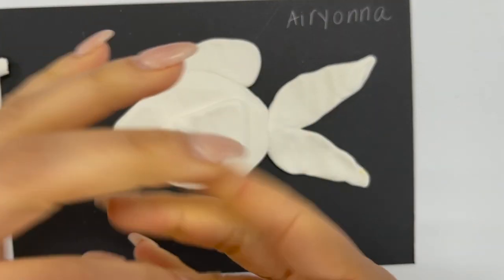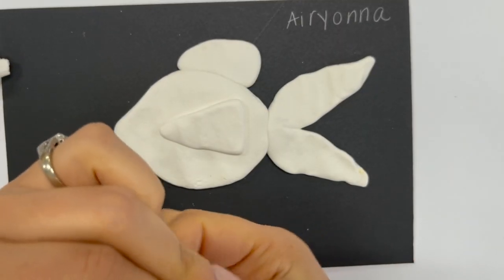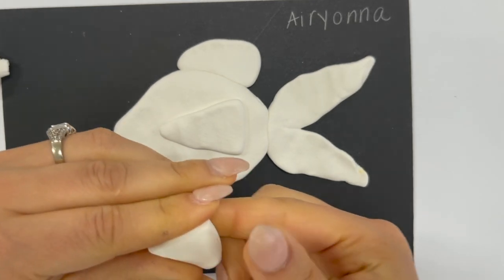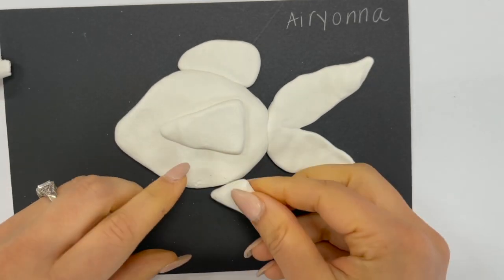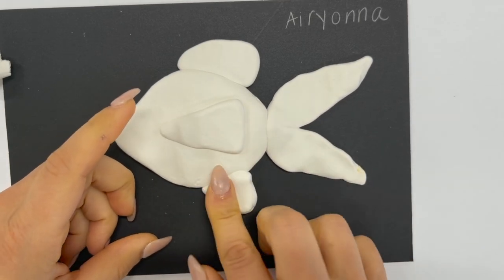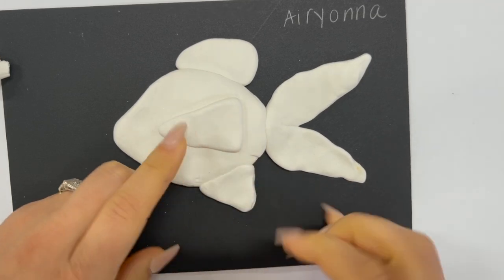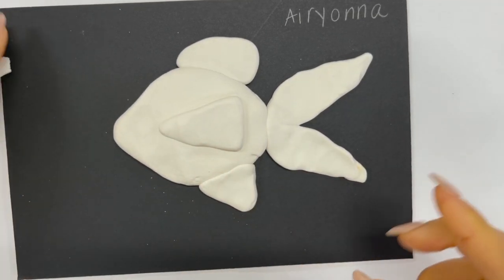I'm going to add another little fin to the bottom of my fish like we saw on the diagram. I'm just making another little triangular shape. I'm going to add it down here to the bottom and smooshy smooshy with my fingers, get it just the way I want it.